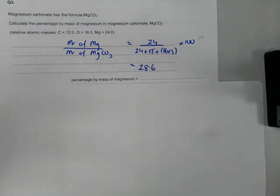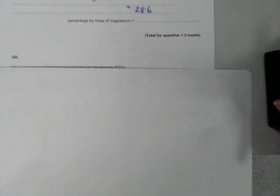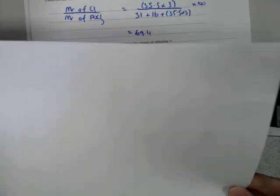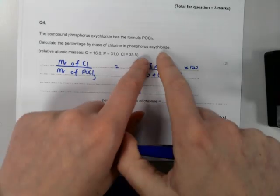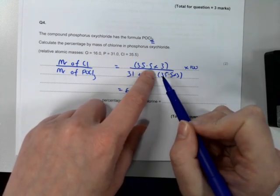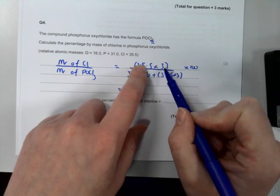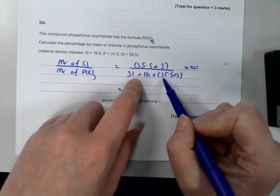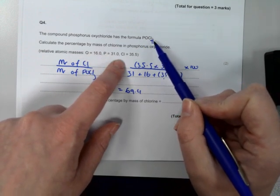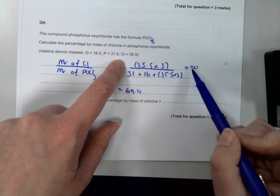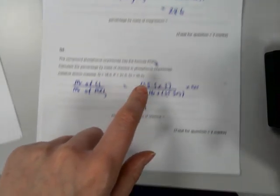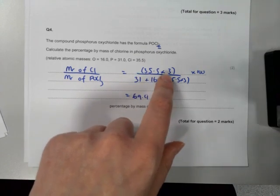It doesn't specify significant figures, so you can round that up to 29 if you wish. The next question is similar, but there is one difference: you're asked for chlorine, and this time you've got three chlorines in your formula. So on the top line, instead of just having 35.5, you have to times it by three — three times 35.5. The bottom line is the same: get the formula mass, one phosphorus (31), one oxygen (16), and three chlorines (3 × 35.5). Times by 100, and I get 69.4%.